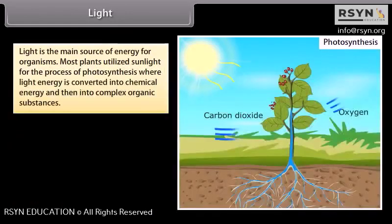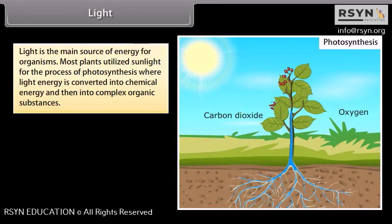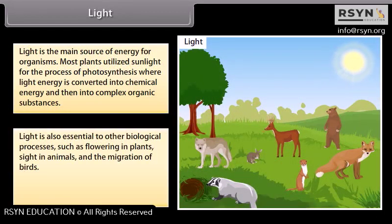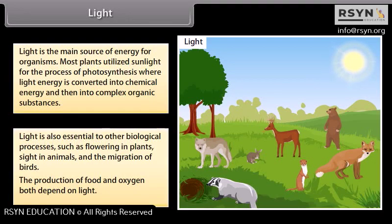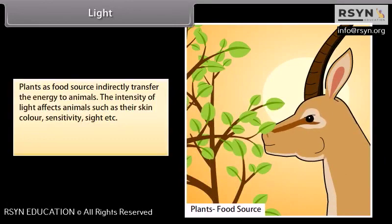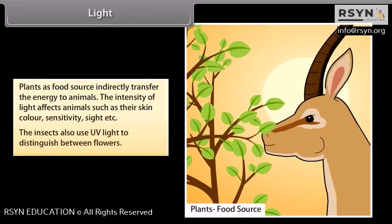Light is the main source of energy for organisms. Most plants utilize sunlight for photosynthesis, where light energy is converted into chemical energy and then into complex organic substances. Light is also essential to other biological processes such as flowering in plants, sight in animals, and the migration of birds. The intensity of light affects animals such as their skin color and sensitivity. Insects also use UV light to distinguish between flowers.